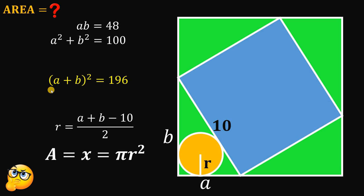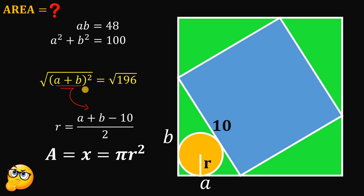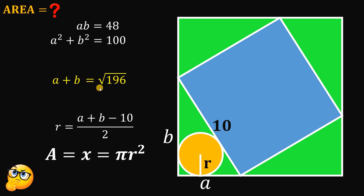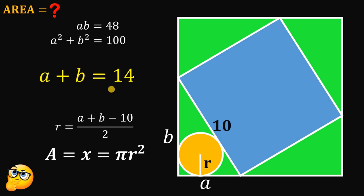Now if we take the square root on both sides, we get the value of A plus B. Since A and B are side lengths of a right triangle, A plus B cannot be negative, so we take only the positive value. The square root of A plus B squared gives us A plus B, and the square root of 196 is just 14. So the value of A plus B equals 14.